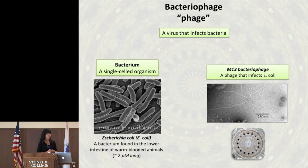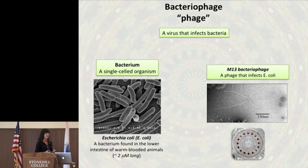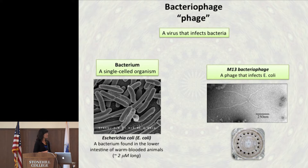E. coli is found in the intestines of warm-blooded animals including humans. The virus that infects E. coli is also in the intestines and is usually isolated from sewage. The ones people use in the lab have been isolated from sewage.